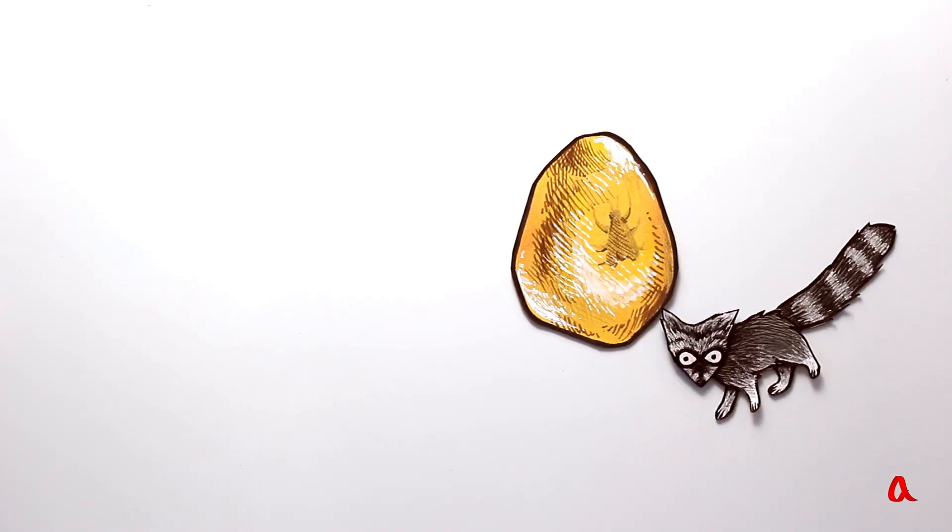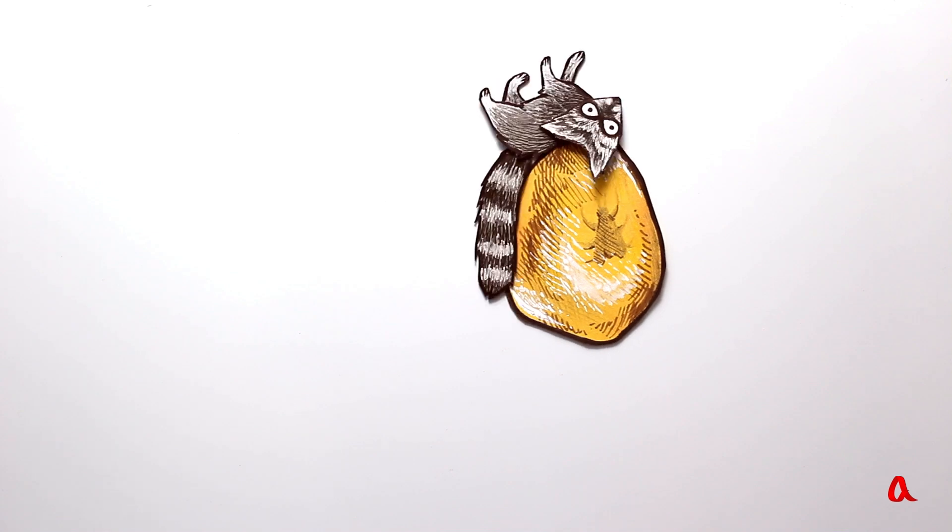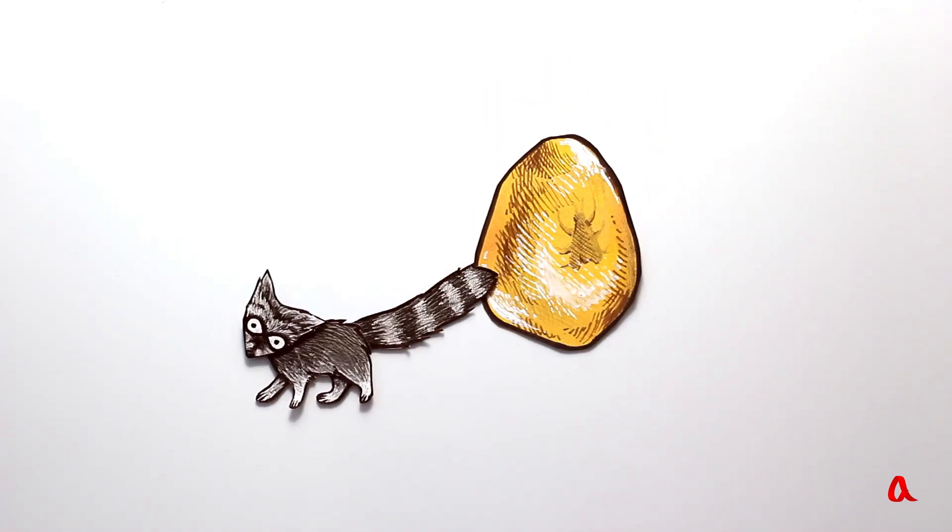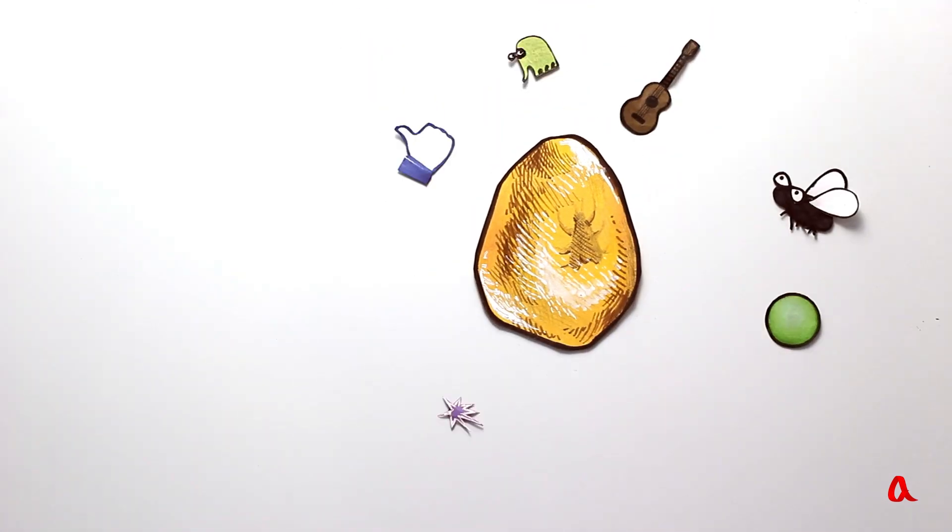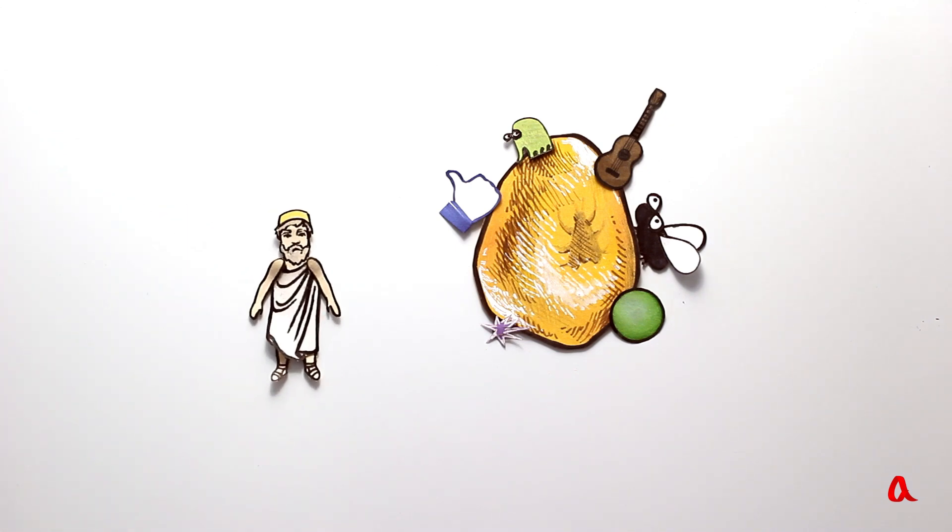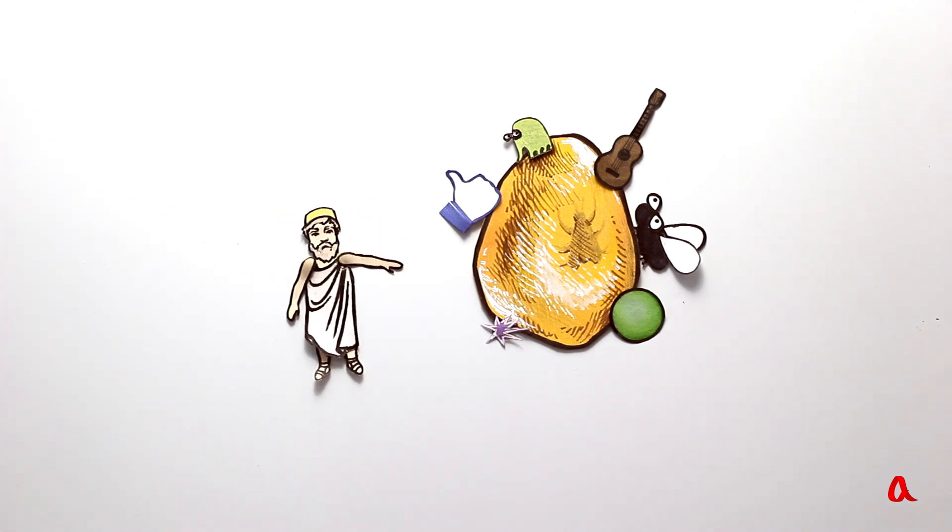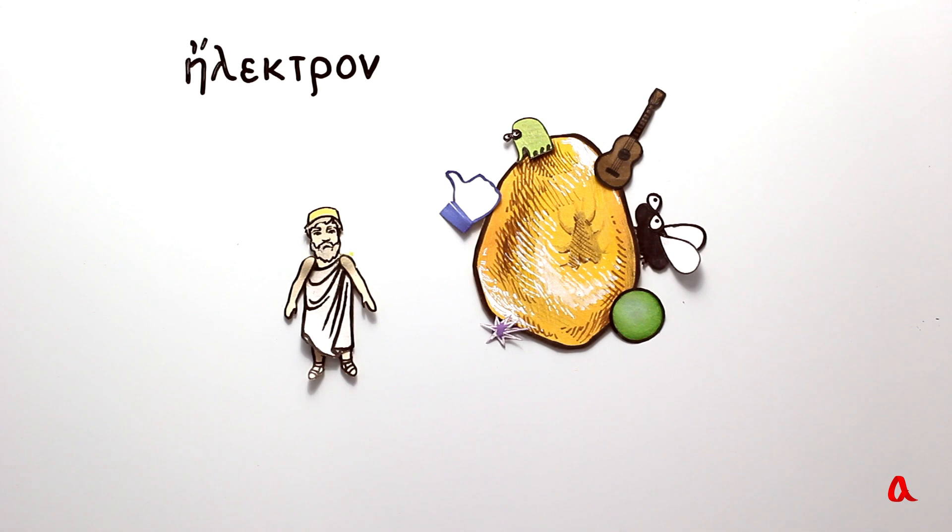It was known as early as in ancient Greece that a piece of amber rubbed against skin or fur attracts small objects. The Greek for amber is electron, and this is where the word electricity originates.